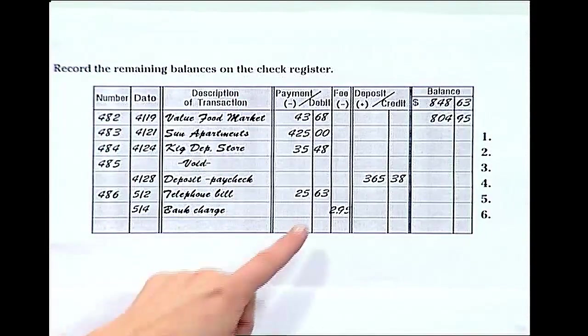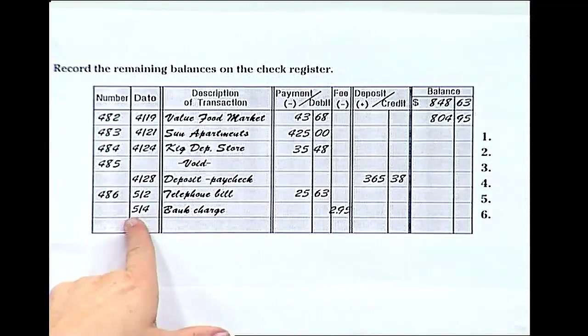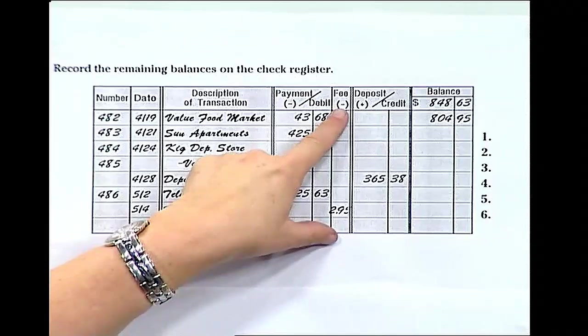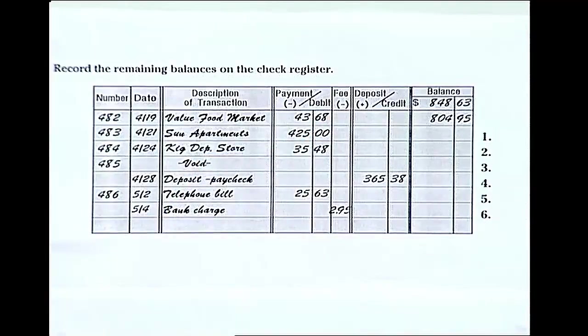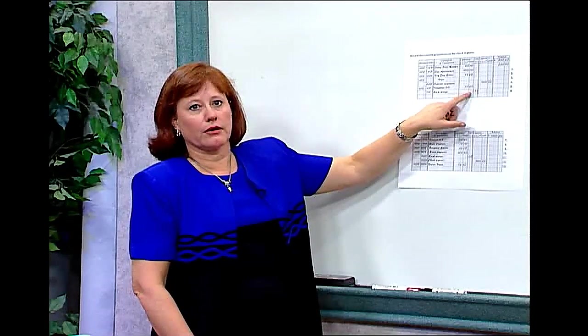When you pay a fee, you're going to want to record it in the fee column. In this column, it says there's a bank charge of $2.95. The fee is a subtraction column. The bank will take the fees automatically out of your account, and you'll want to make this note and be sure to subtract it from your account.